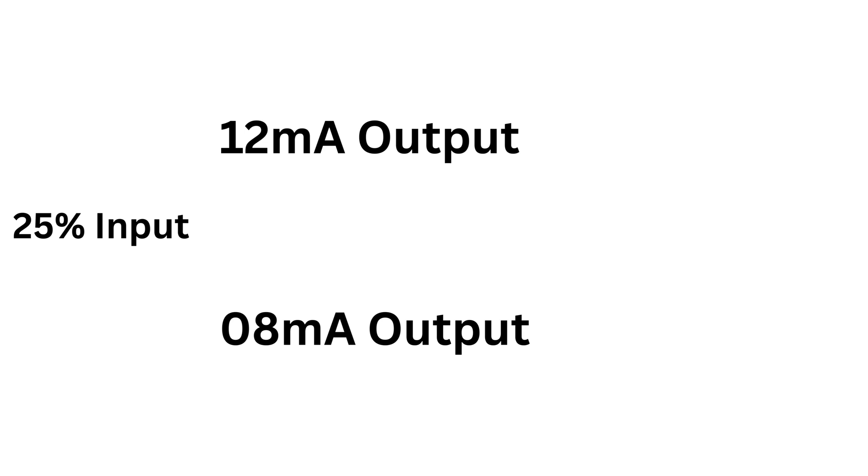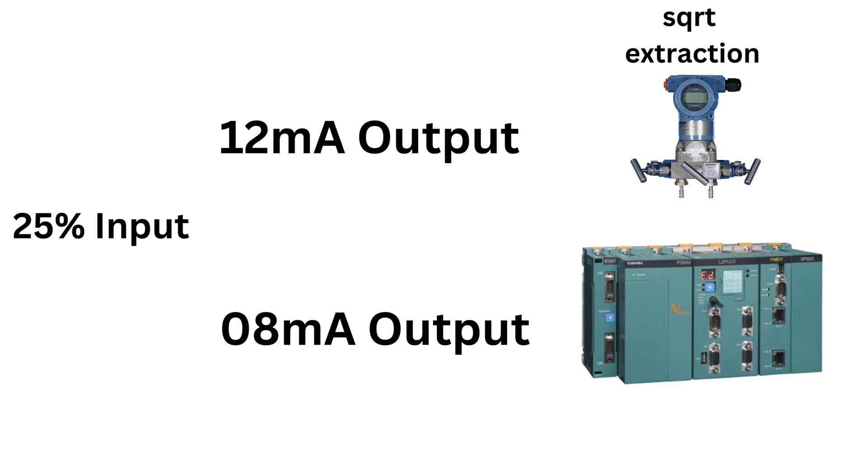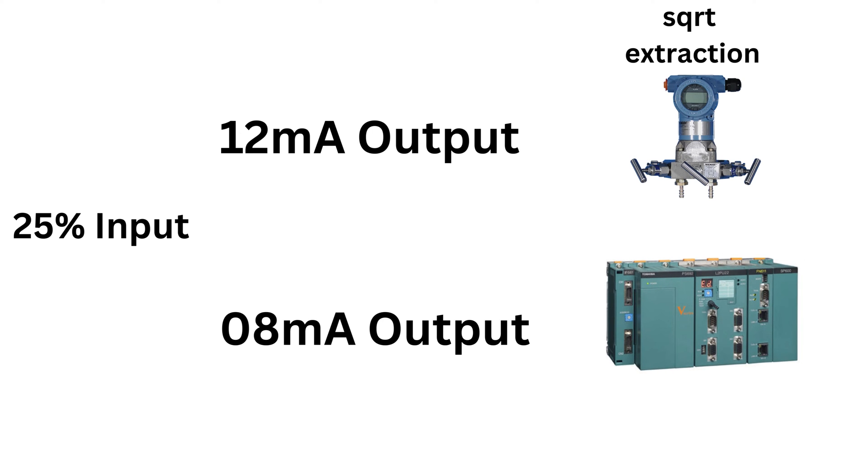A third option is to simulate 25% of the DP range with the pressure calibrator and look at the output in mA of the DP transmitter. If the output is about 12 mA, the square root extraction is performed by the transmitter. If the output is about 8 mA, the square root extraction is performed by the PLC-DCS.